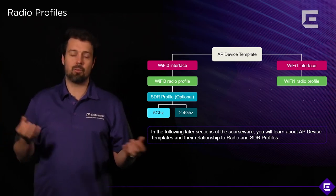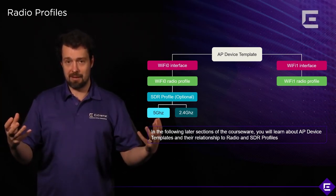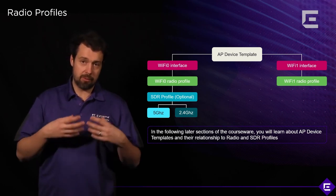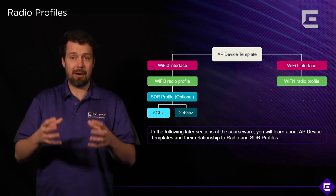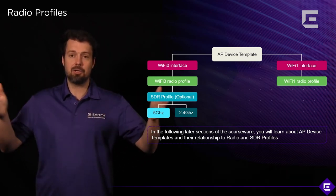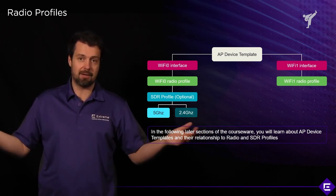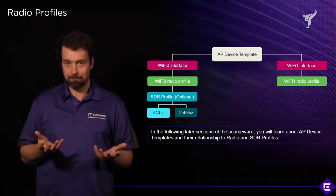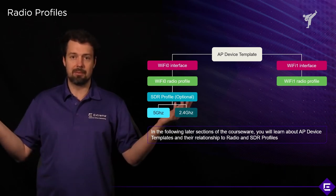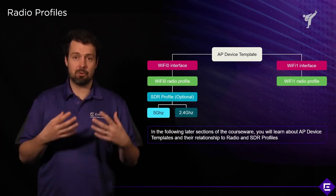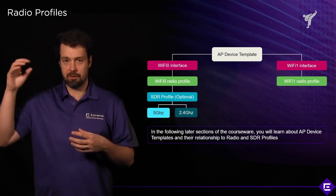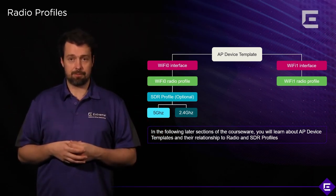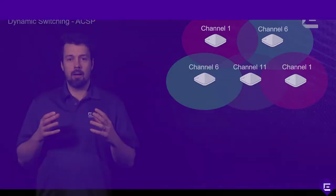Wi-Fi 0 has more to configure; Wi-Fi 1 requires just one radio profile. Radio profiles themselves have many different settings you can tweak. The default radio profiles shipped are configured with best-practice settings across the largest possible number of deployments, so they should work for most environments. However, if you want to tweak them for a particular building, floor, or deployment, you can create your own or modify the existing ones.